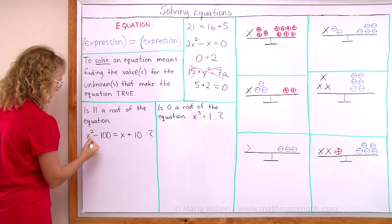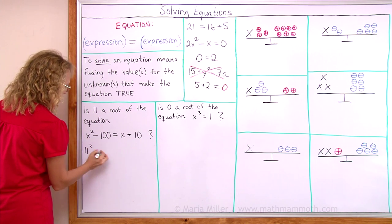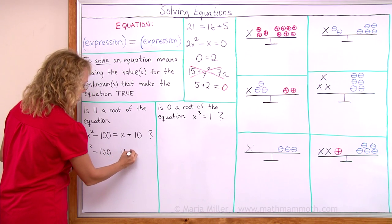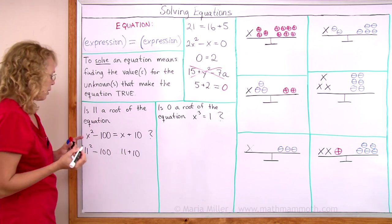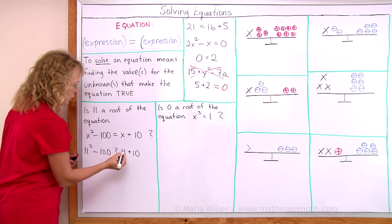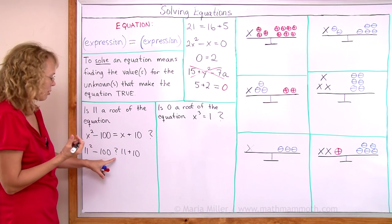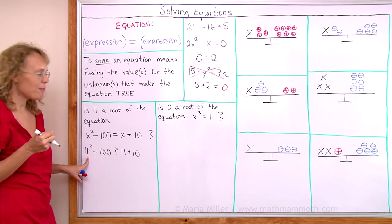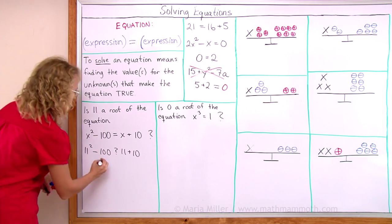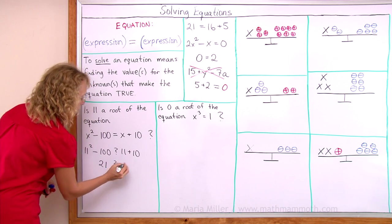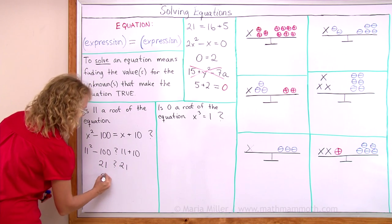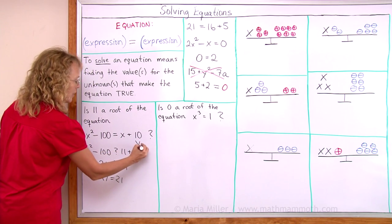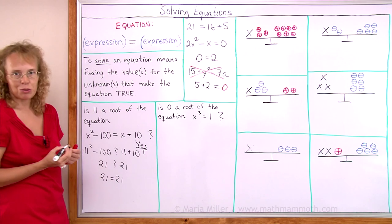Like this. 11 squared minus 100 on this side. On this side we have 11 plus 10. Now we are checking if these two expressions are equal. So I'll put the question mark here. 11 squared is 121 minus 100. That would be 21. Over on this side I have 21. Yes, 21 is equal to 21. So yes, the answer is yes. It is a root of that equation. This equation has another root too, which is negative 10. You can try that one too.